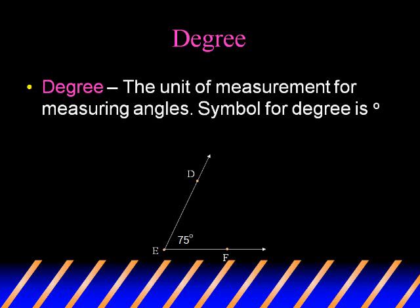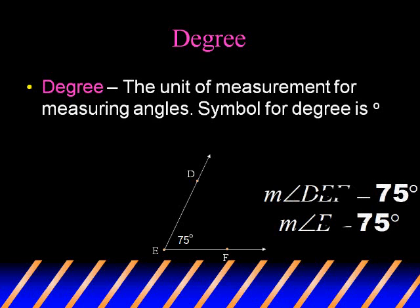Degree is the unit of measurement for measuring angles. The symbol for degree is the little circle. The angle symbol DEF would be read as the measure of angle DEF, and that is equal to 75 degrees for this angle. That can also be written as the measure of angle E, which is still 75 degrees.